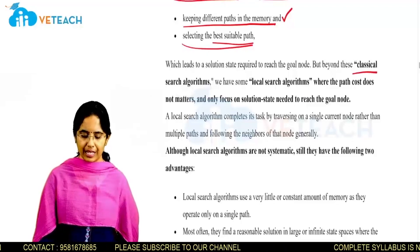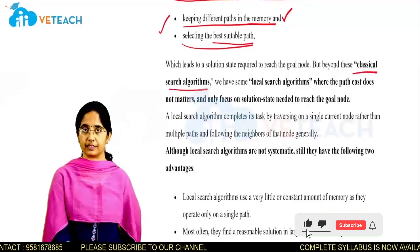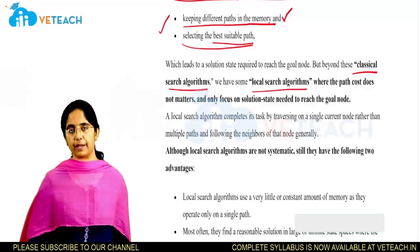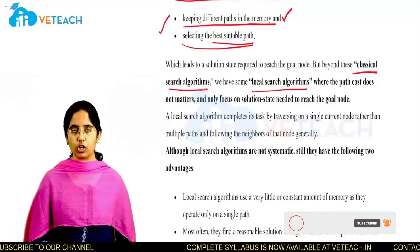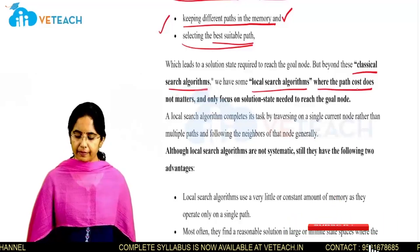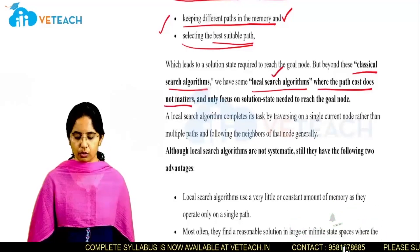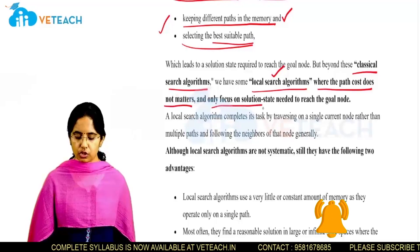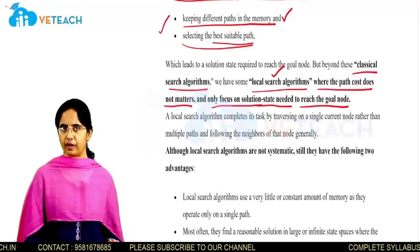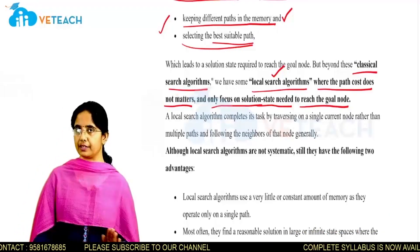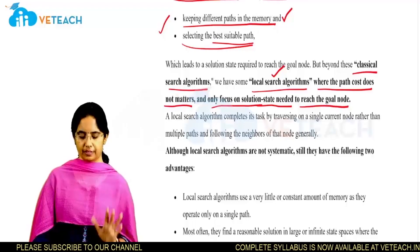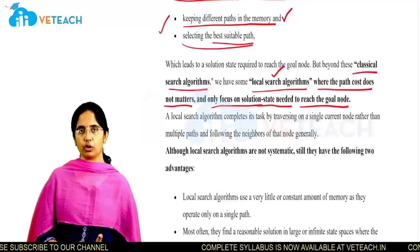Compared to these classical search algorithms, we have another type called local search algorithms. In these algorithms, the path cost is not mandatory — we only focus on the solution state needed to reach the goal node. We do not consider how much cost it takes to find a solution; the only important thing is to find a solution for the given problem at that point in time.